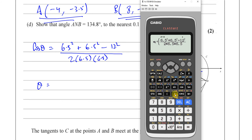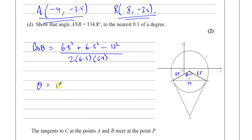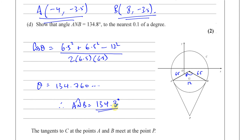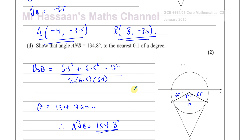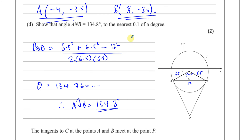Calculating inverse cosine of that expression gives 134.760 degrees. Therefore, angle ANB is 134.8 degrees to one decimal place.